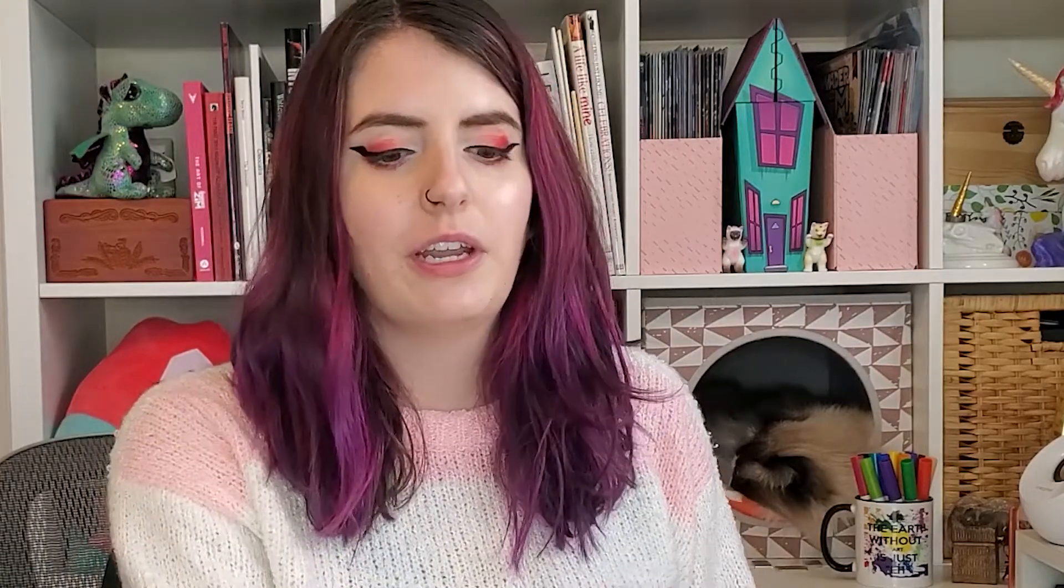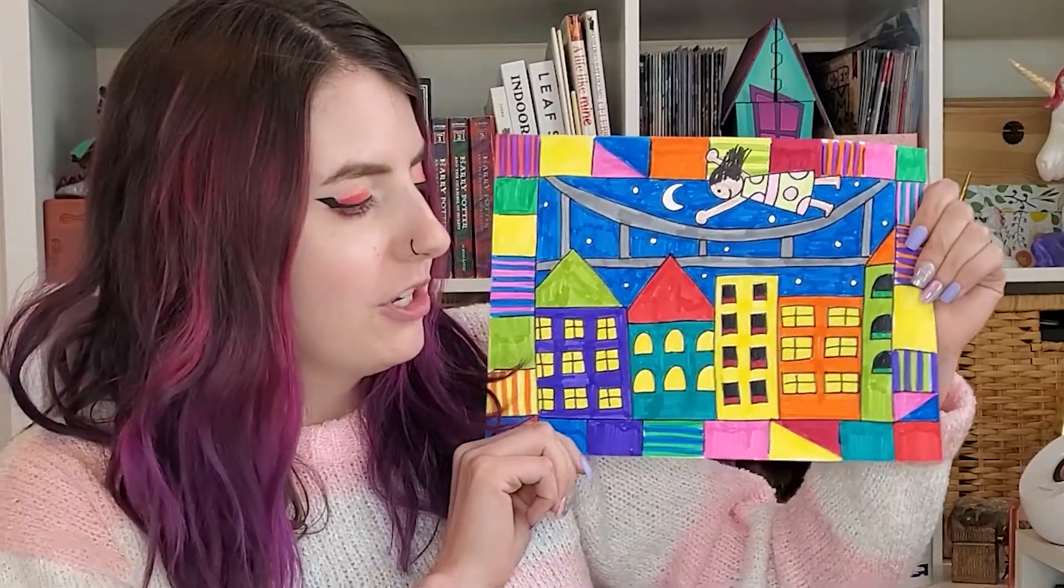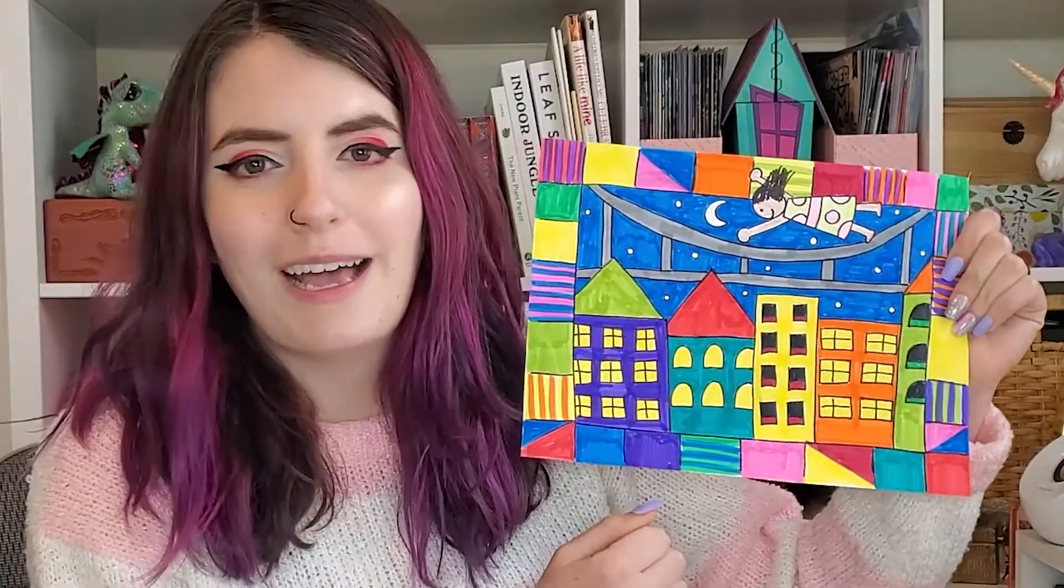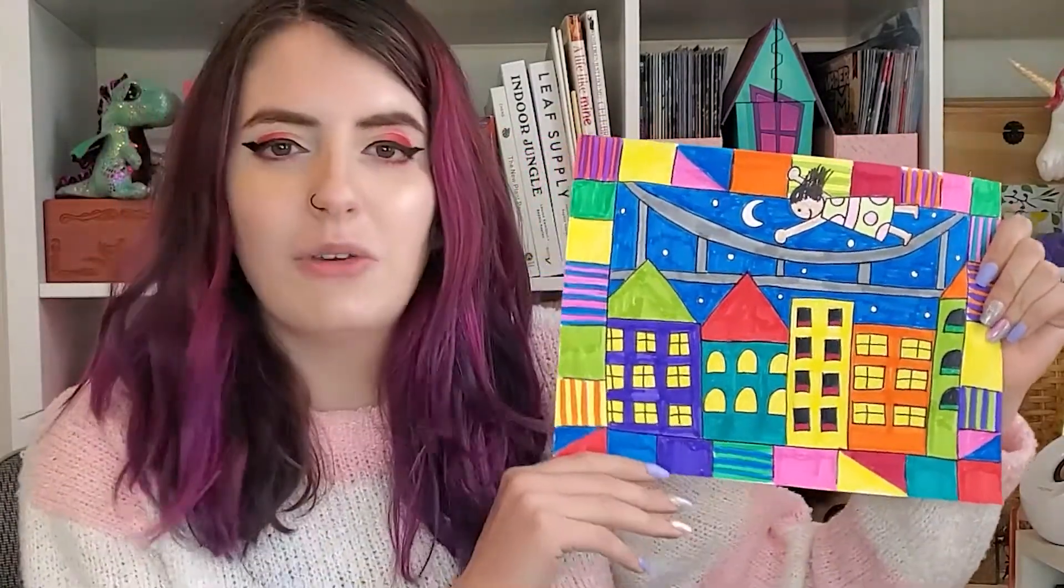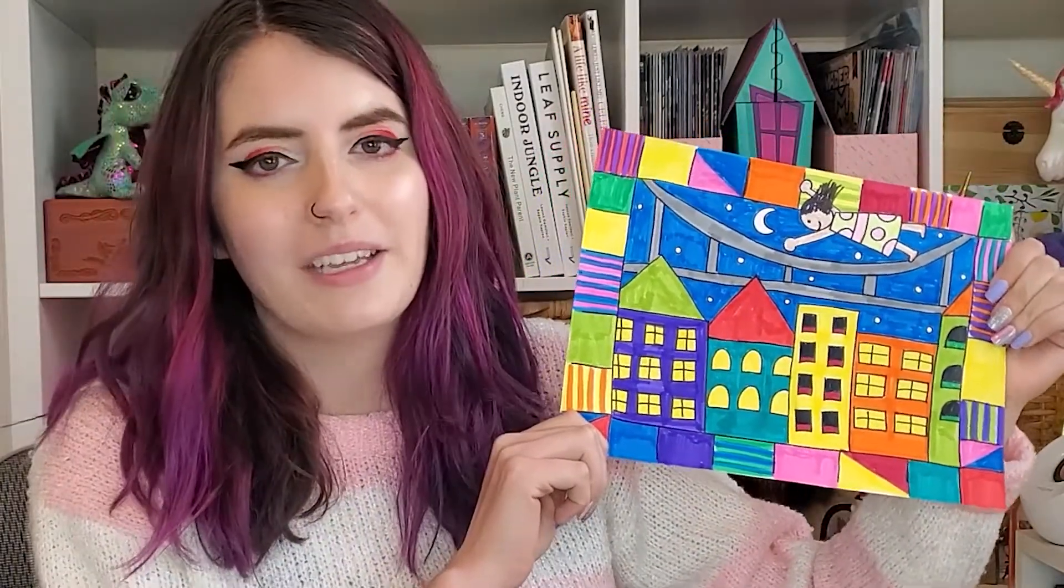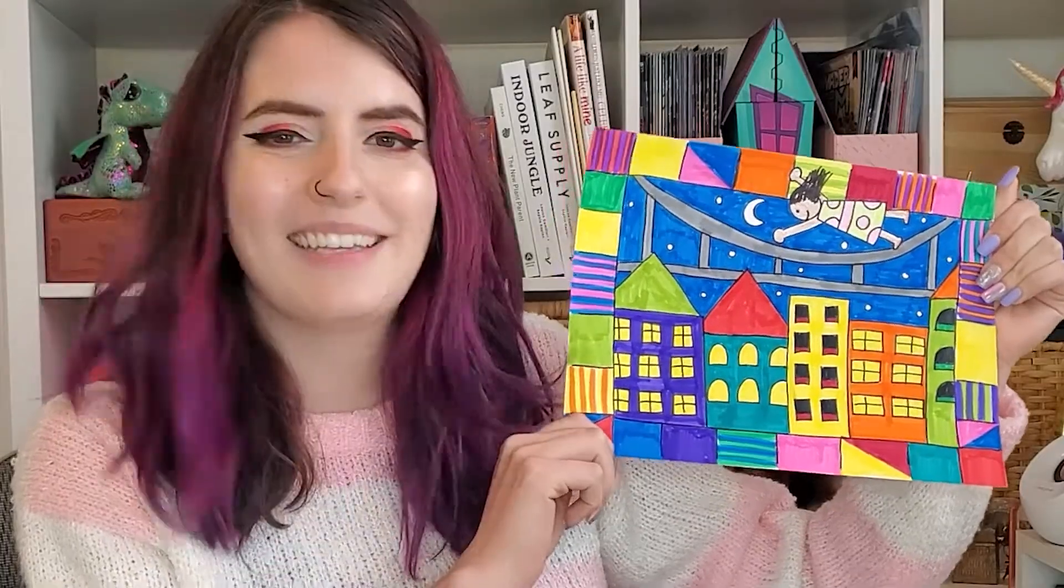For our project today, we are going to be inspired by Faith Ringgold's Tar Beach story and make our own drawing similar to Tar Beach. I will show you how to make your border, your person flying over your city, and you can also be creative and make the city look any way that you want. Go ahead and grab your supplies and let's get started.